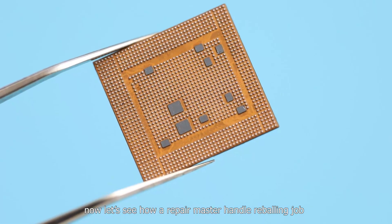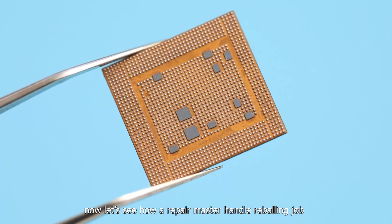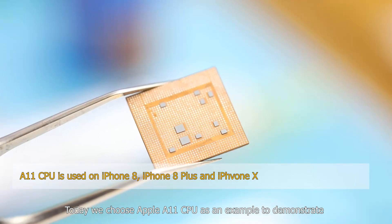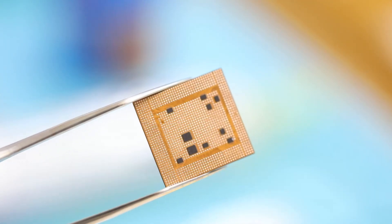Now let's see how a repair master handles reballing jobs. Today, we choose the Apple A11 CPU as an example to demonstrate. And here are the tools we need for BGA reballing.